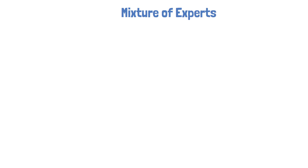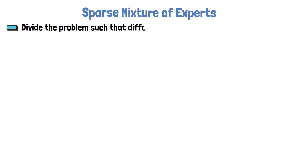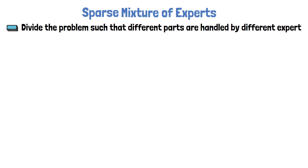Let's start with a quick recap of how the Mixture of Experts method works. The common methods up until now are called Sparse Mixture of Experts, and we also have a video about Soft Mixture of Experts which you can find in the description. The idea with Mixture of Experts is that instead of having one large model that handles all of the input space, we divide the problem such that different inputs are handled by different segments of the model. These different model segments are called Experts.